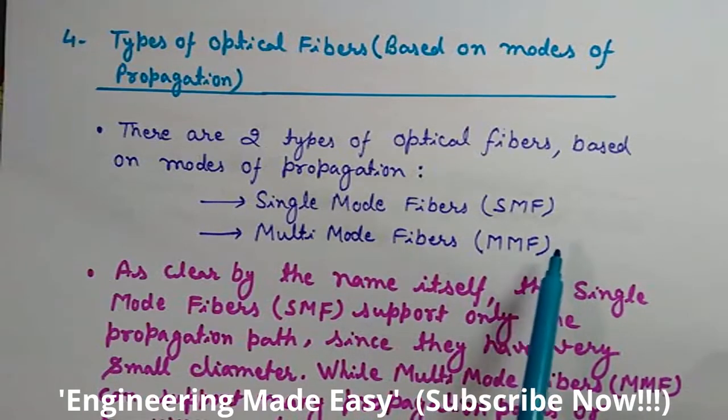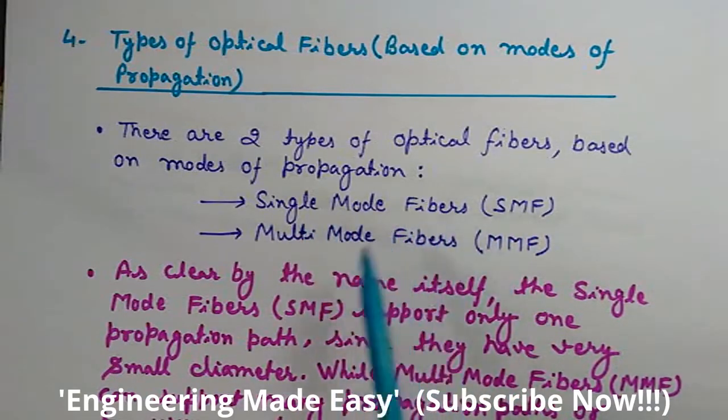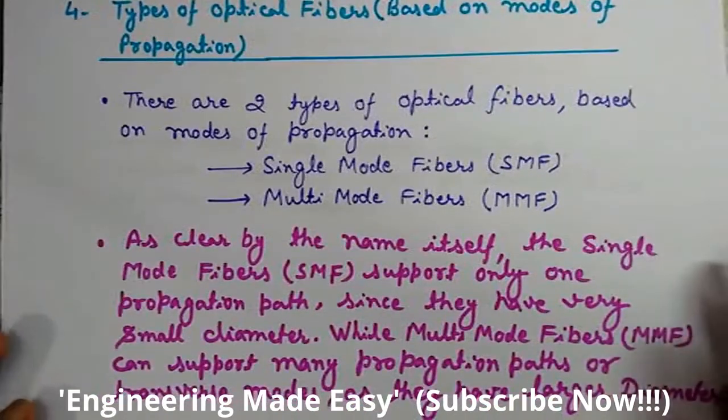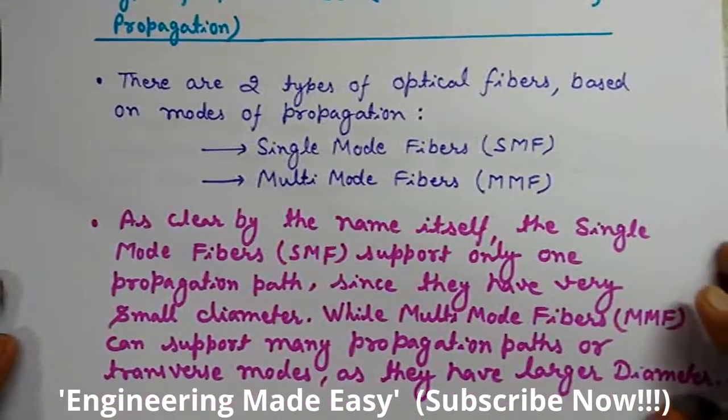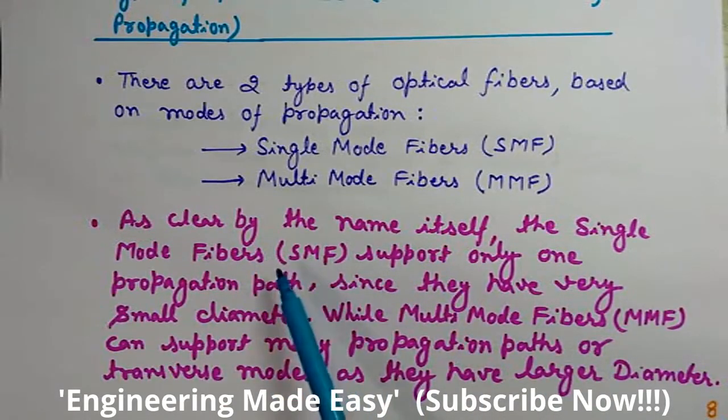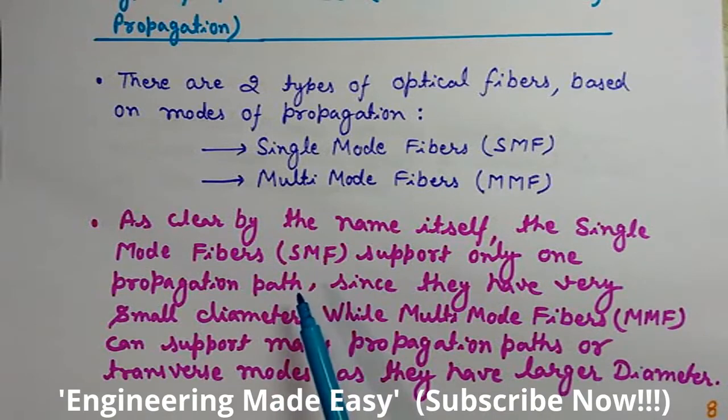Single mode fibers and multimode fibers - let's understand what these are. As clear by the name itself, single mode fibers (SMF) support only one propagation path since they have very small diameter.